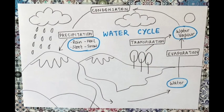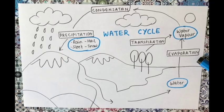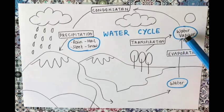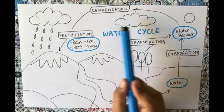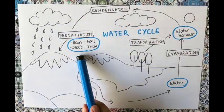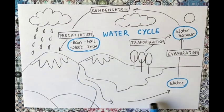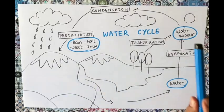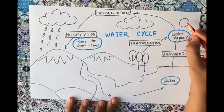Our water cycle picture is complete. Starting from the Sun: the Sun heats the water and changes it to water vapor by evaporation; trees add water vapor via transpiration; all the water vapor cools down by condensation and forms tiny droplets that make clouds; clouds bring water back to earth by precipitation — rain, hail, sleet, or snow; and from rivers the water flows to the ocean, continuing the cycle.